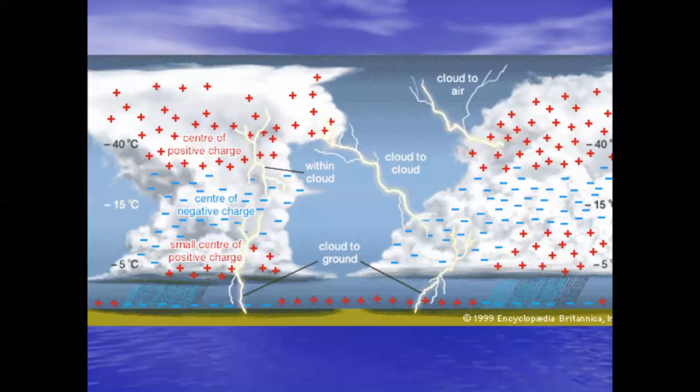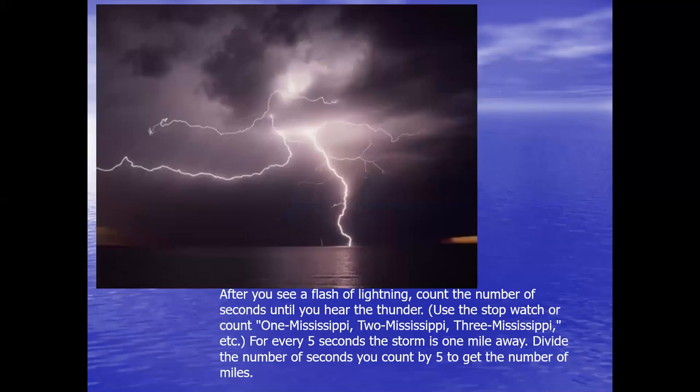There can be cloud-to-cloud lightning, cloud-to-air lightning, lightning within a cloud, and cloud-to-ground lightning. In the video shown here, we see lightning taking place within the cloud, cloud to air, cloud to ground, and cloud to another cloud.